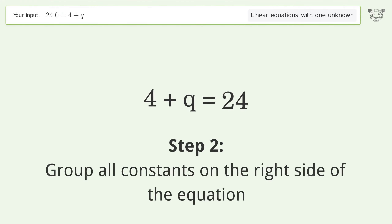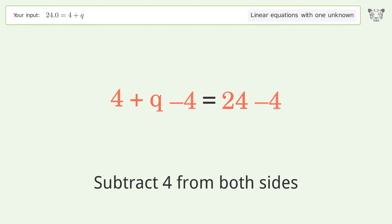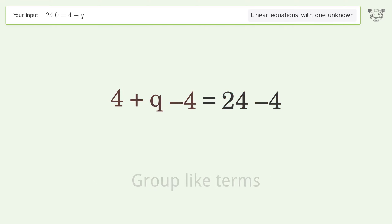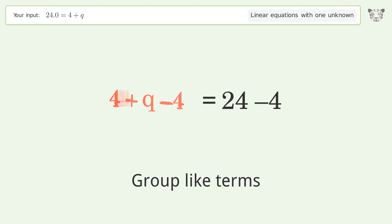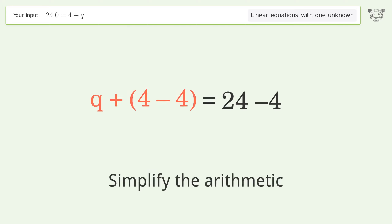Group all constants on the right side of the equation — subtract 4 from both sides. Group like terms. Simplify the arithmetic.